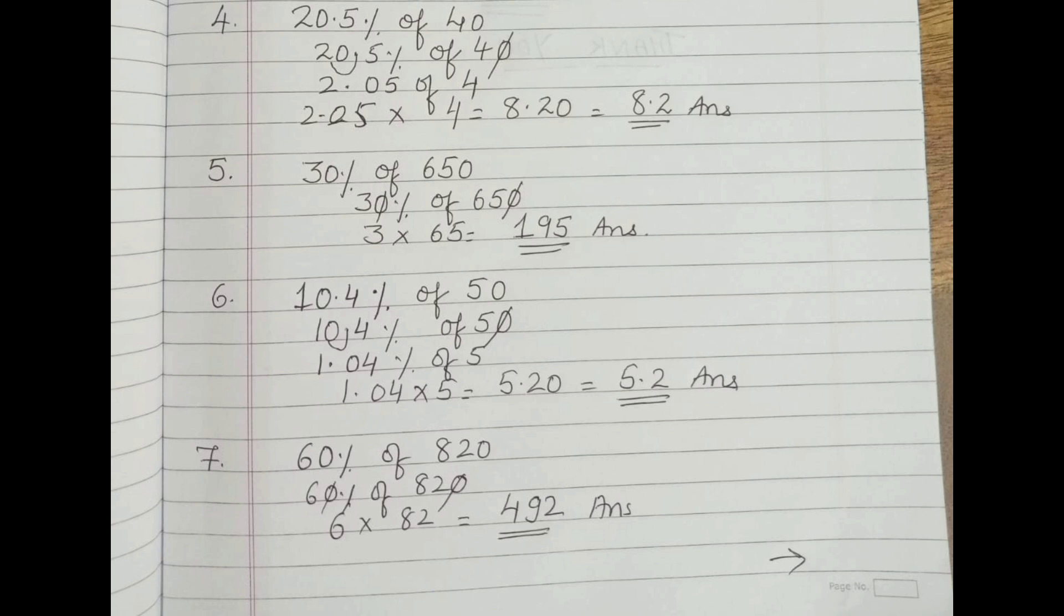Next is a decimal form: 10.4 percentage of 50. Cut the zero from 50, and shift the decimal in 10.4. It becomes 1.04 of 5 in the new form. Then 1.04 multiply 5 equals 5.20. The zero has no value, so the answer is 5.2.